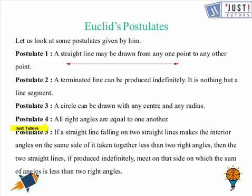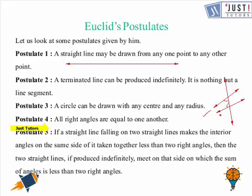To illustrate postulate five mathematically: we draw two lines that meet at some point. The two interior angles are the angles formed on one side. If we extend those lines, they will definitely meet on the side where the angles sum to less than two right angles. On the other side, they will never meet. This is what postulate number five is saying.